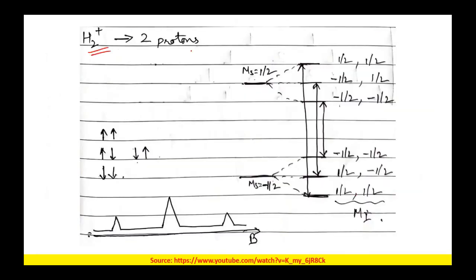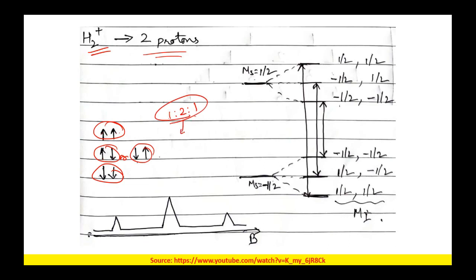For H2+ ions with two protons, the electron spin levels are further split. The possible proton spin arrangements give: both up, one up and one down (two arrangements), and both down — resulting in three peaks with intensity ratio 1:2:1, a triplet. Just as in NMR using Pascal's triangle, here also the intensity ratio for a triplet is 1:2:1.